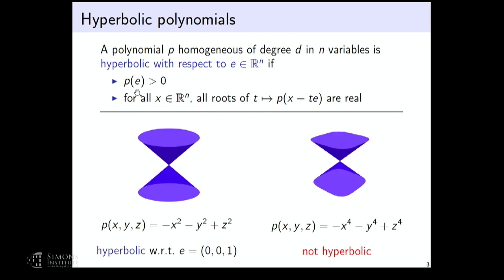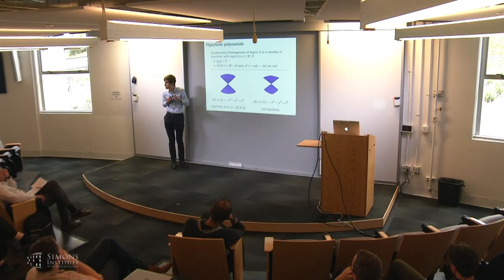Let's start with hyperbolic polynomials. We say a polynomial is homogeneous of degree d in n variables—I'll use d for degree and n for number of variables. It's hyperbolic with respect to some direction in R^n if, when I evaluate the polynomial in that direction, it's positive. And more importantly, no matter where I start in space, if I look at the polynomial along the line defined by this direction, it has all real roots.